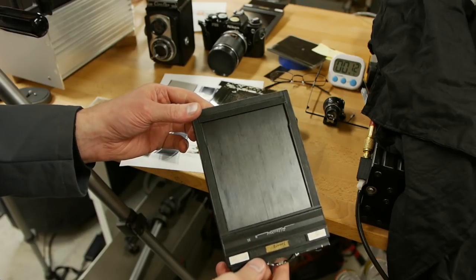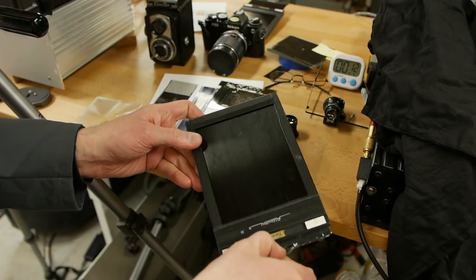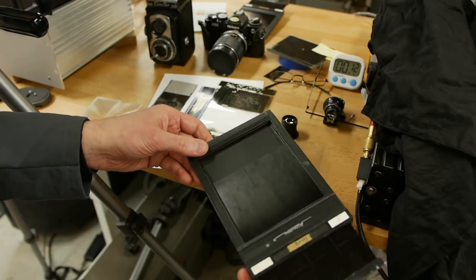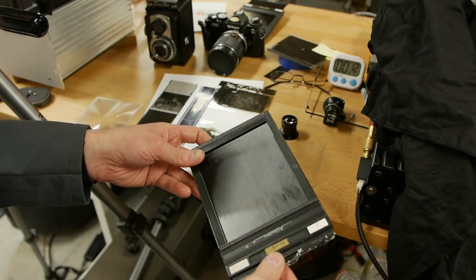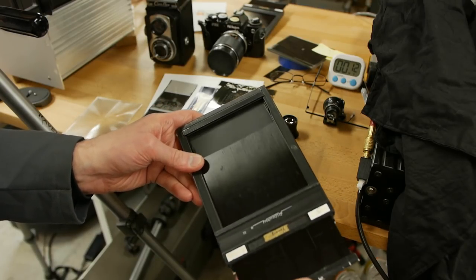These film holders are also quite impressive at how simple they are. Obviously, it needs to keep the film in total darkness until it's time to put it in the camera and shoot it. And so that's what these black shutters are for.